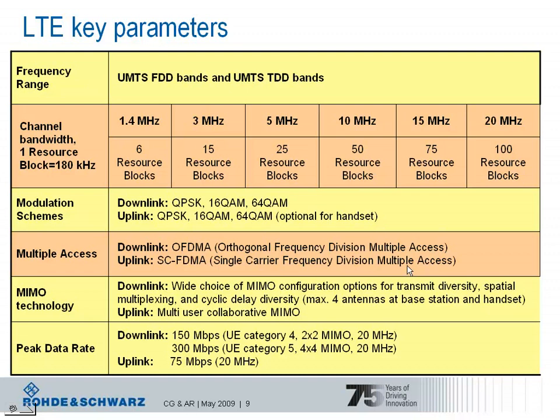Modulation schemes available for LTE are QPSK, 16QAM, and 64QAM, where in the uplink 64QAM is optional for the handset to support. Multiple access schemes for LTE are OFDMA — orthogonal frequency division multiple access — in the downlink, and single carrier FDMA in the uplink.